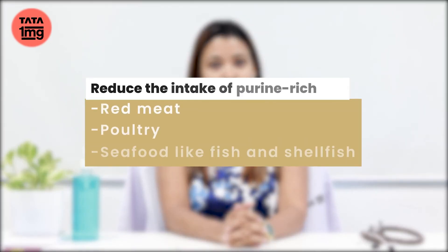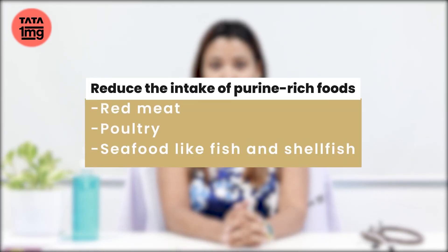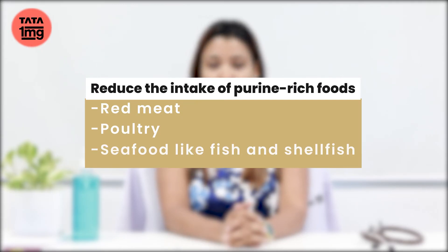We will know how to treat this. There are certain methods that we can use to reduce elevated uric acid levels. Limit your purine-rich foods like meat — especially red meat — poultry, and seafood like fish and shellfish.